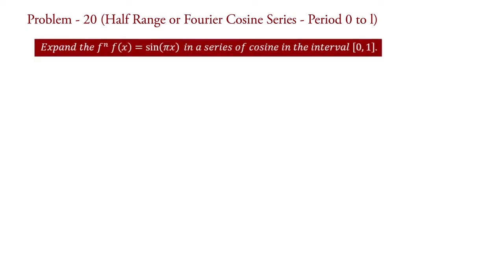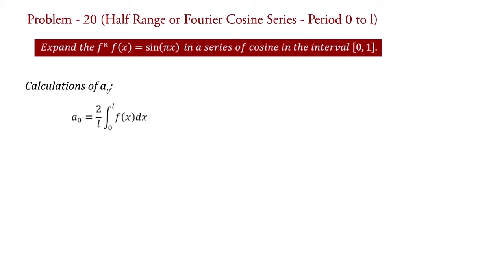The problem is: expand the function f(x) equal to sin(πx) in a series of cosines in the interval 0 to 1. In a cosine series, we need coefficients a0 and aN. The formula of a0 for interval 0 to L is a0 equal to 2 upon L, integral 0 to L of f(x) dx. Substituting the values of f(x) and L, we get a0 equal to 2 times integral 0 to 1 of sin(πx) dx.